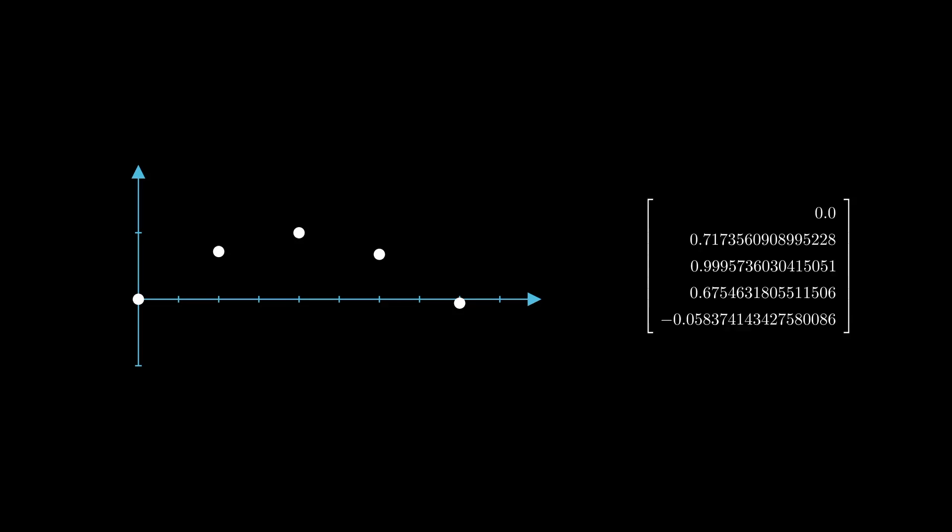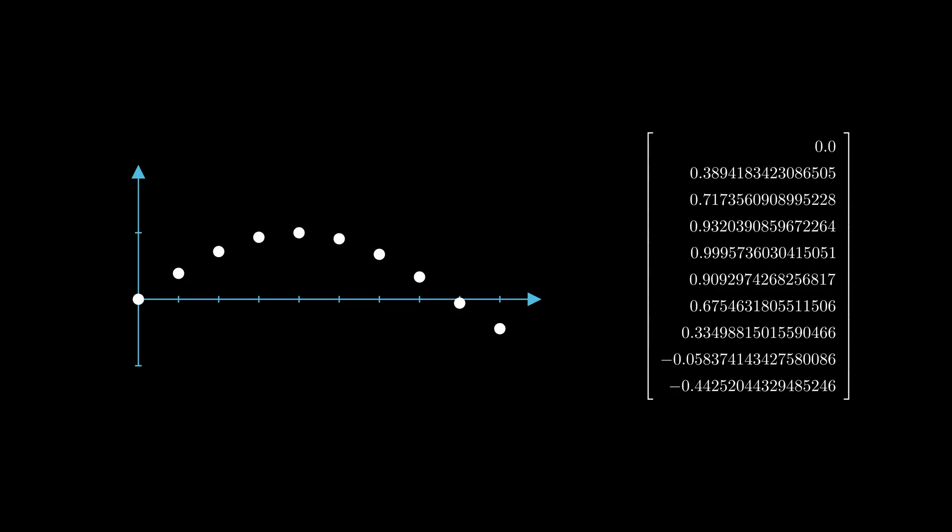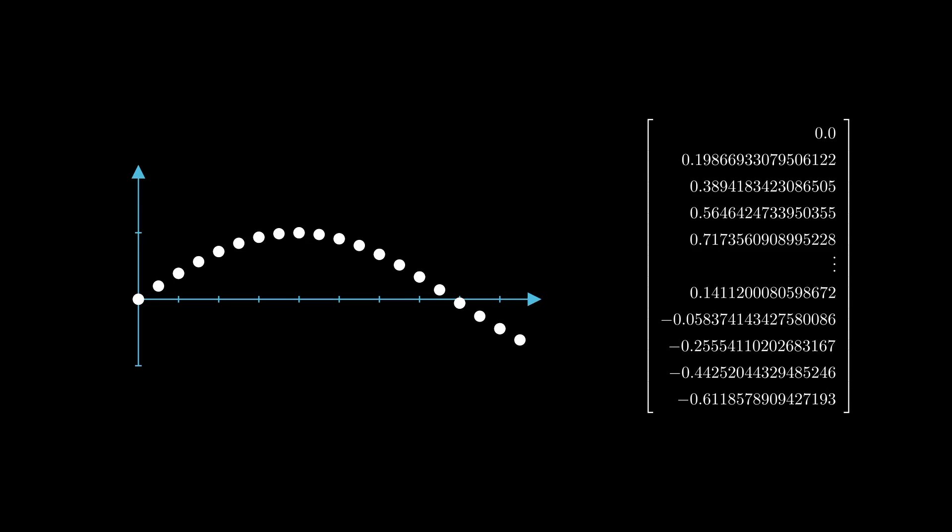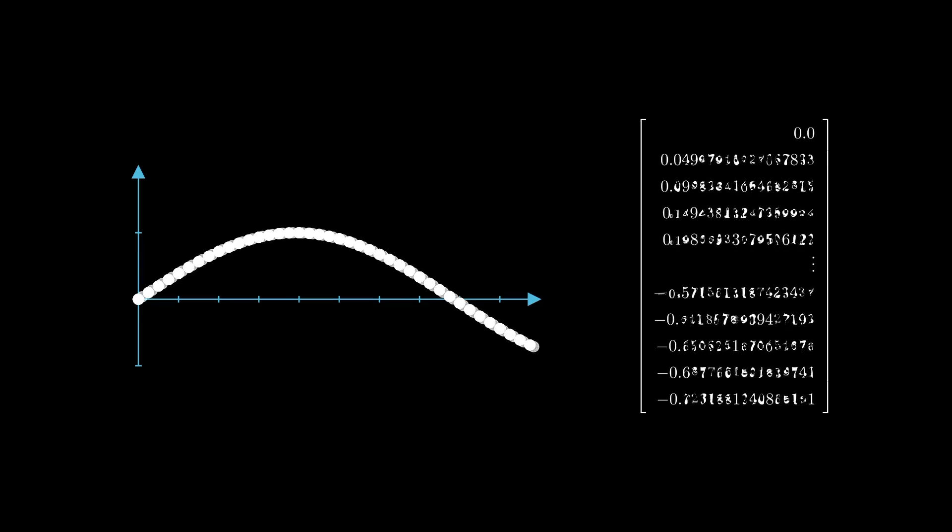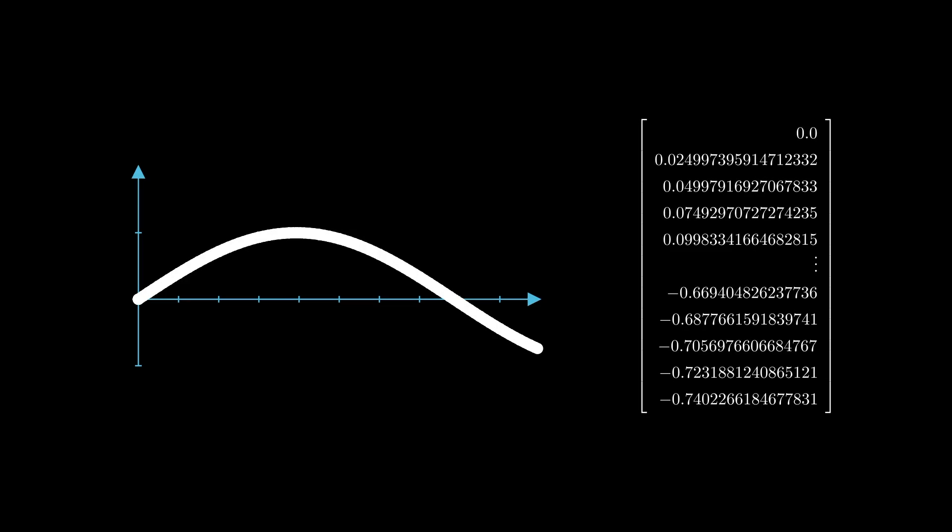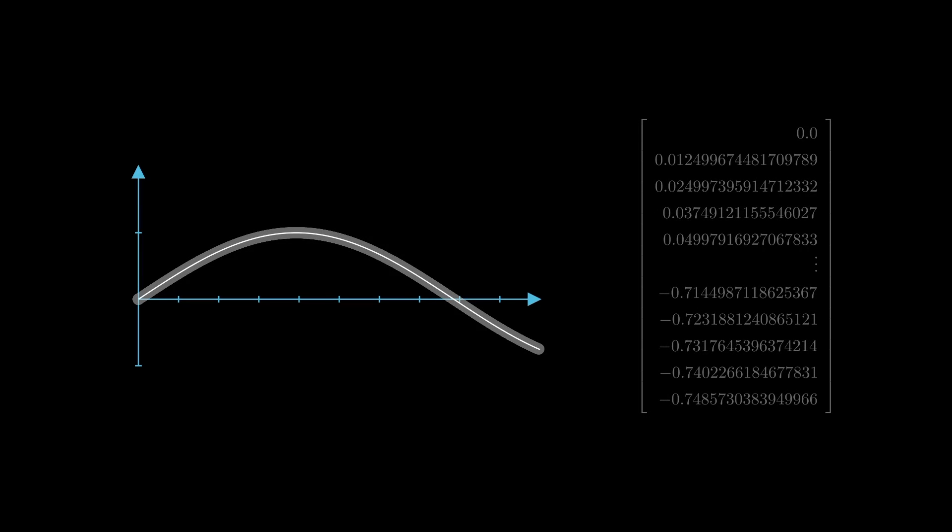Now, you might see where I'm going with this. If we start amping up the number of dimensions, we can end up with something that looks a lot like a plot of a function. And in the limit, it's a sort of vector with an uncountably infinite number of dimensions. This new type of vector still has some of the properties that you might be used to with finite dimensional vectors.